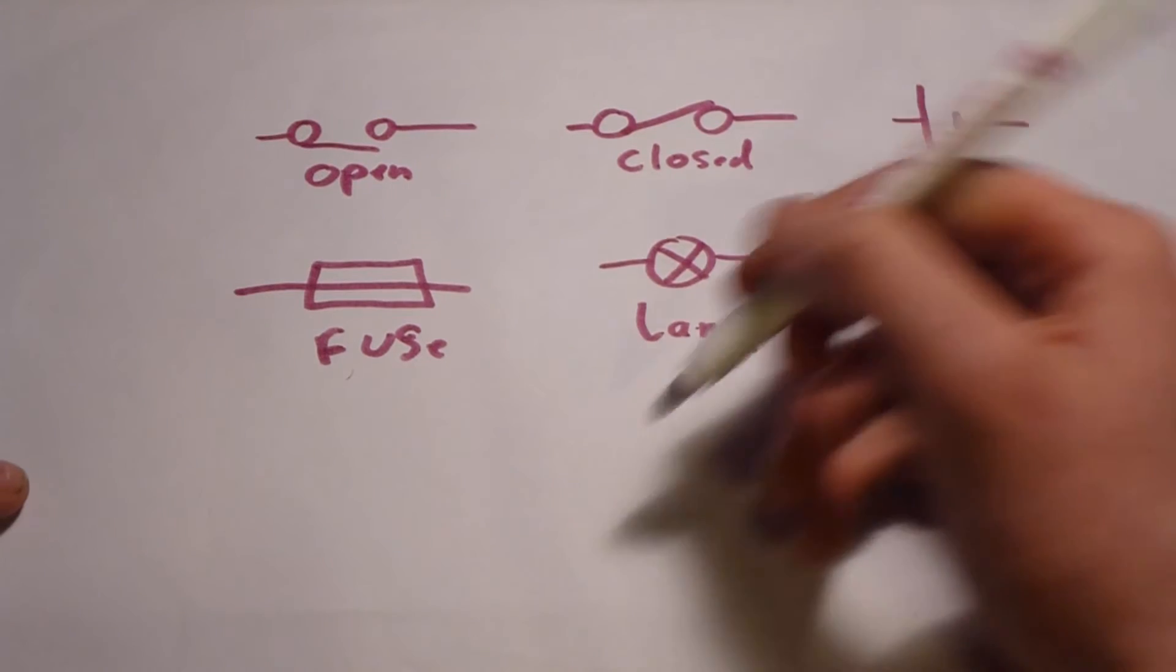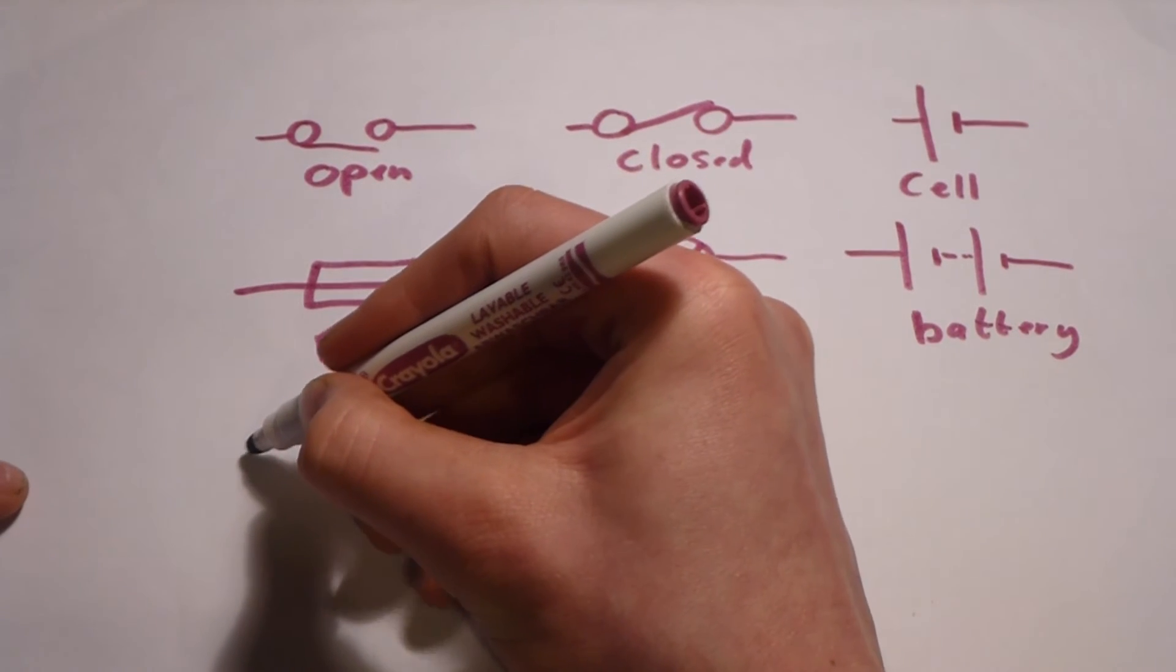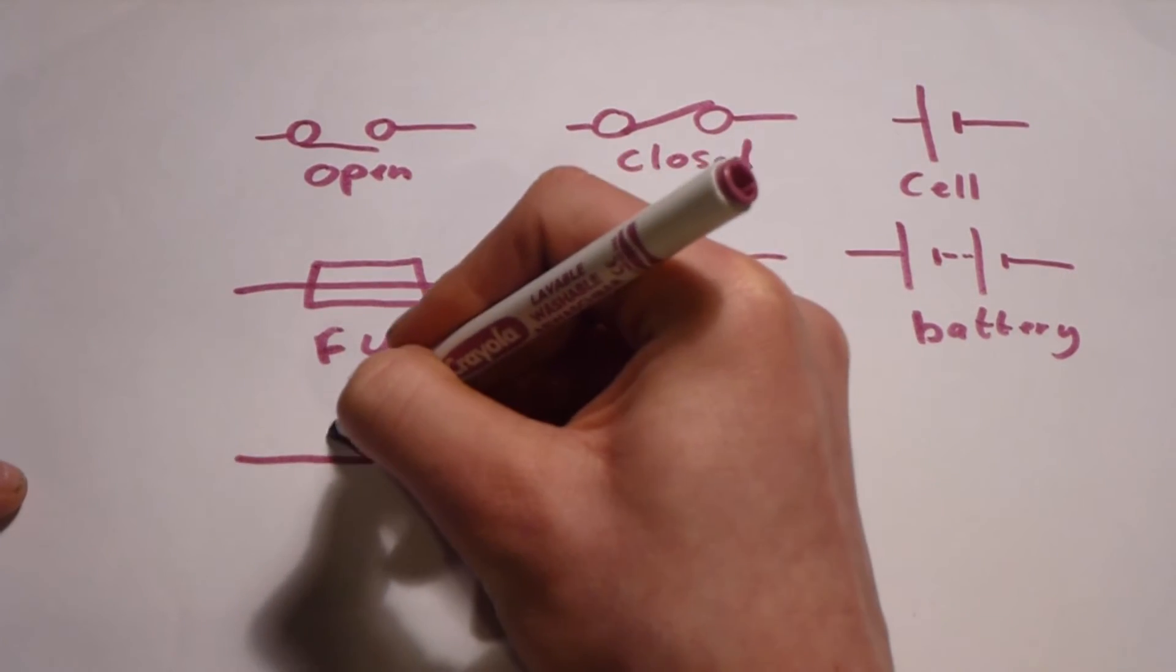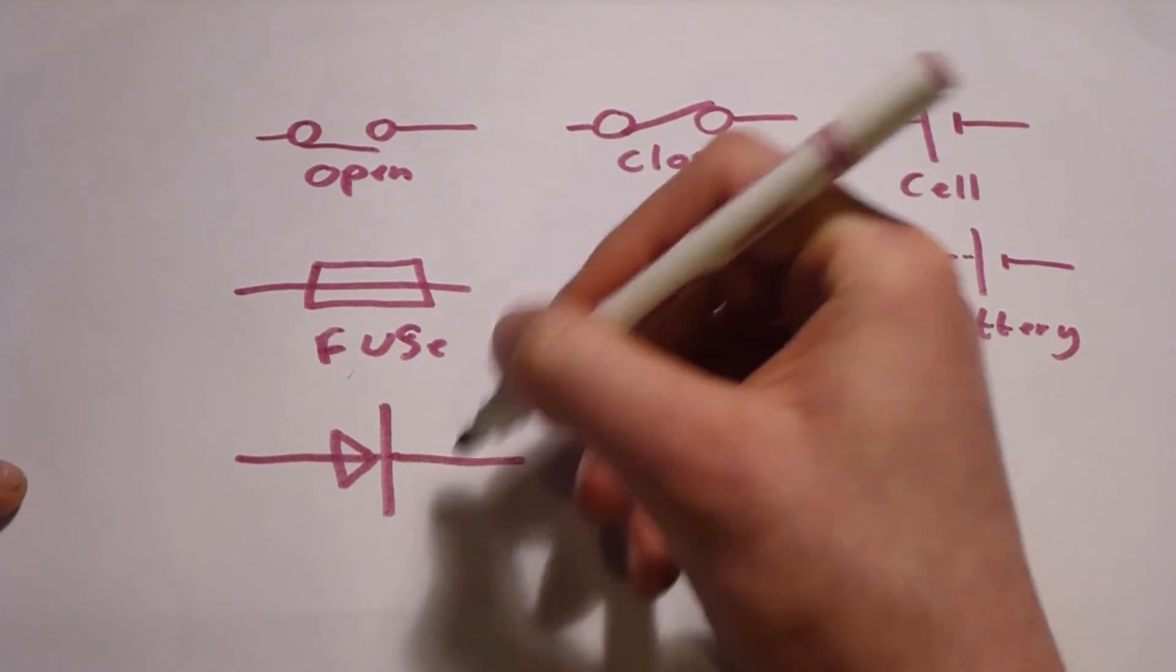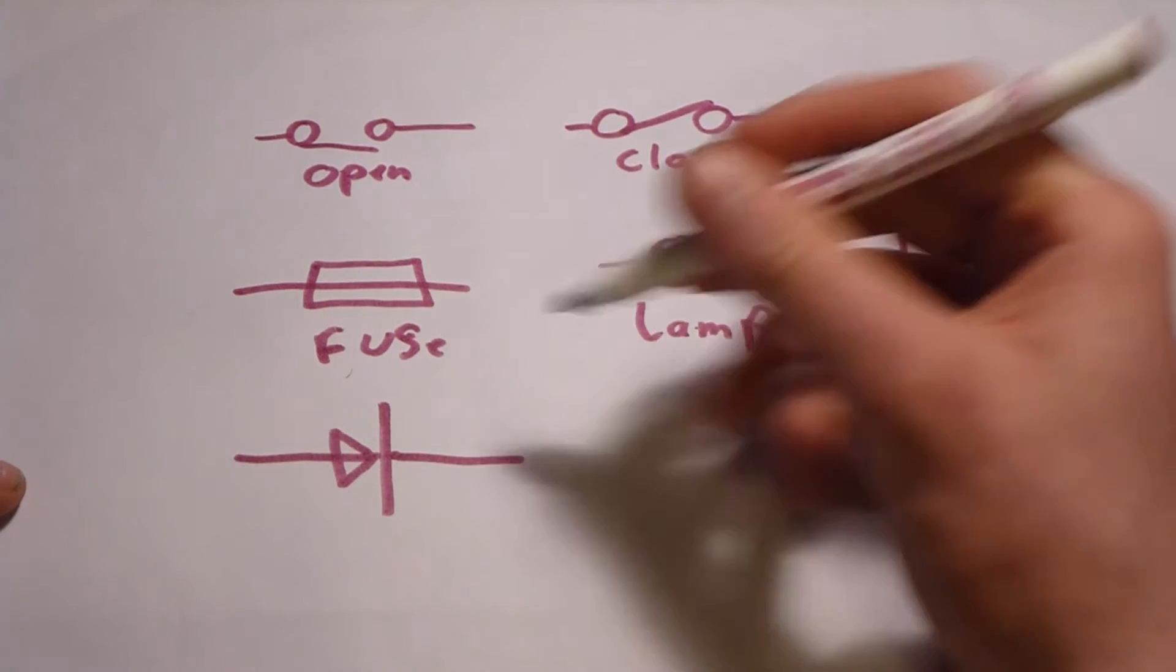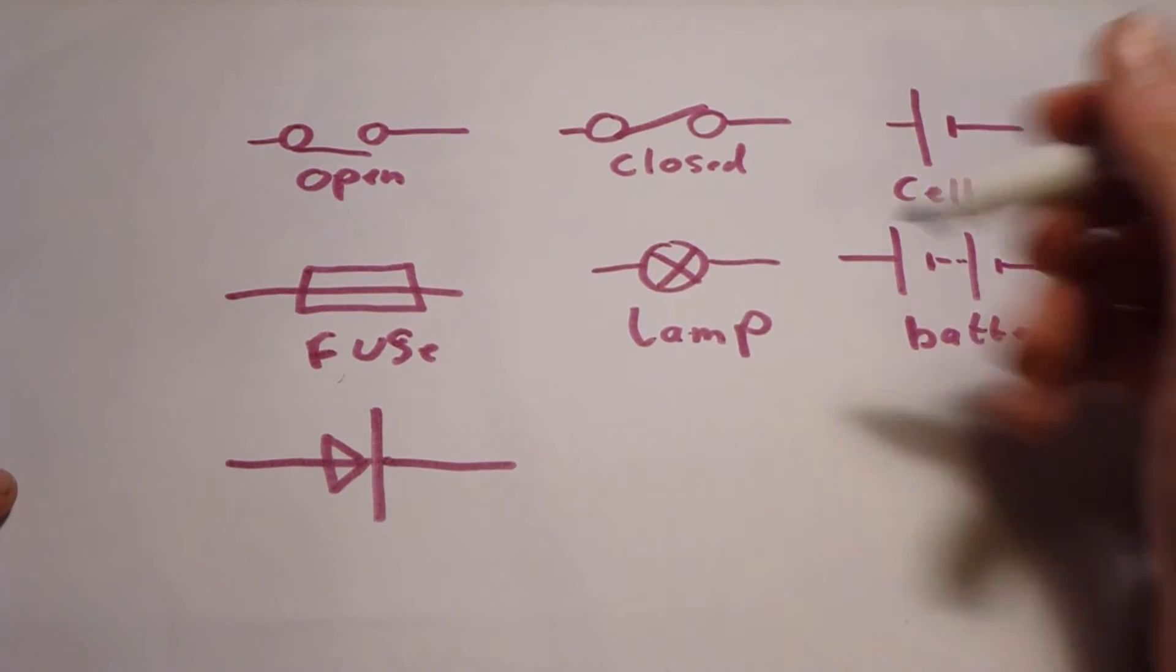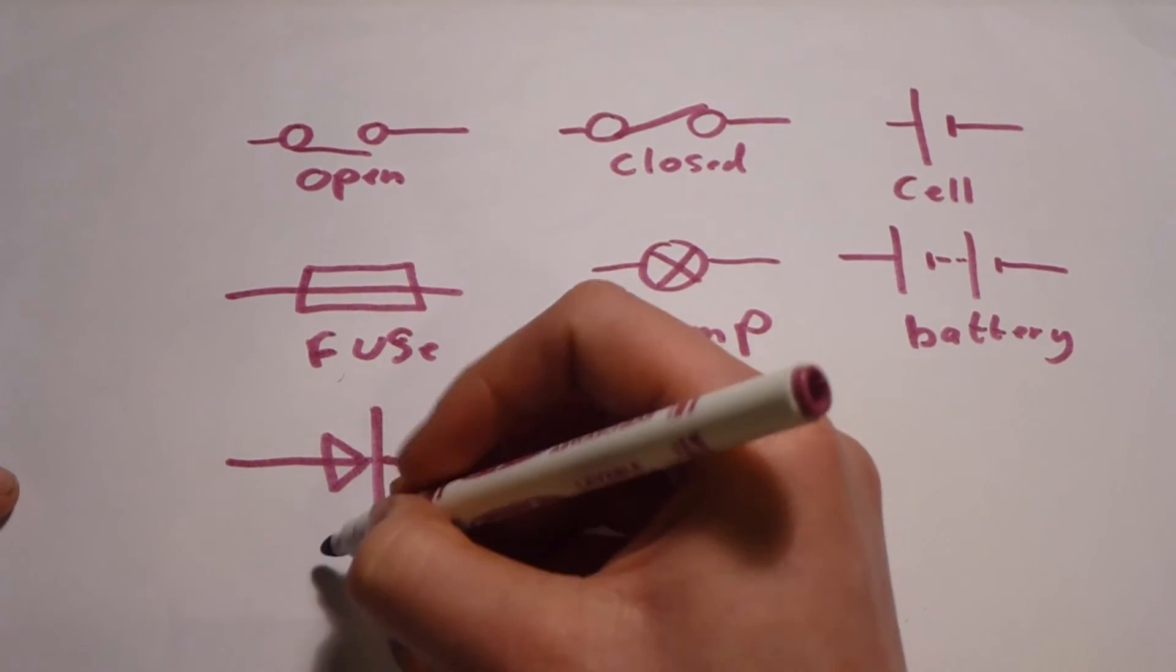After the fuse, we have a diode, which is like a one-way valve. So there's an arrow showing which way the current can flow, and like a wall to stop the current from flowing through. That's a diode.